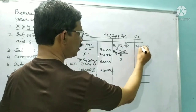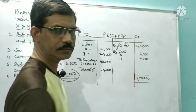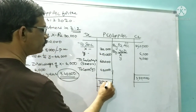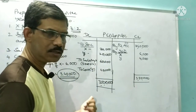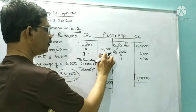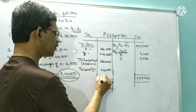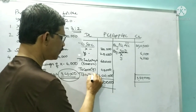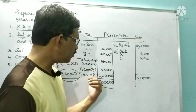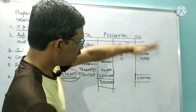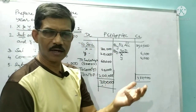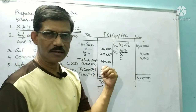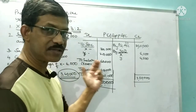Now let us calculate. The credit side total is 3,50,000 (3,40,000 + 6,000 + 4,000). The debit side total is 1,50,000 (30,000 + 20,000 + 60,000 + 40,000). So 3,50,000 minus 1,50,000 equals 2,00,000. This 2,00,000 is the net divisible profit. Credit is more than debit, so you have profit.